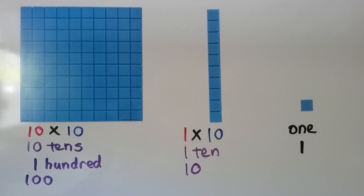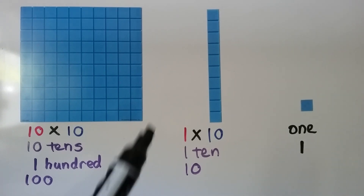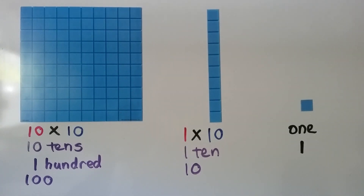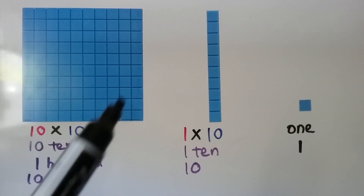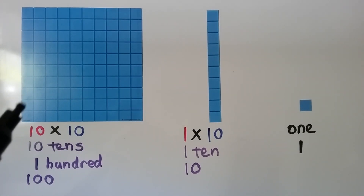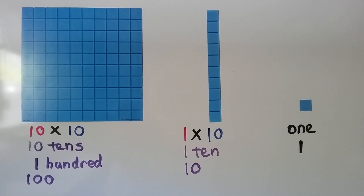Here we have some base 10 blocks — base 10 squares. This small square represents 1. Here we have a strip of 10, which is 1 times 10, or 10 of those little ones. And here we have 10 of those strips put together to make 10 tens — that's 10 times 10, or 100.